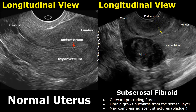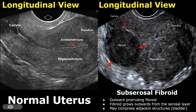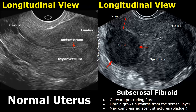The outermost layer of the uterus is the serosa and this is where a subserosal fibroid is found. We can see this fibroid protruding outwards, so this is a subserosal fibroid.